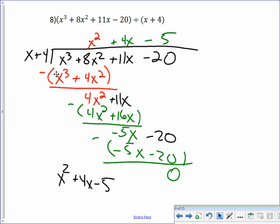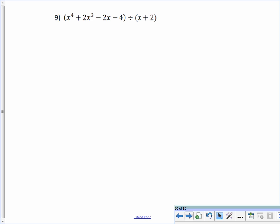Now you could have done that synthetically as well. But I figured I'd show you one long division and I'll do number 9 synthetically. So negative 2. Now, this one's a little tricky because the coefficients are 1, 2, 0, negative 2, negative 4. Careful here. There is no x squared term and we need that placeholder for the x squared term.